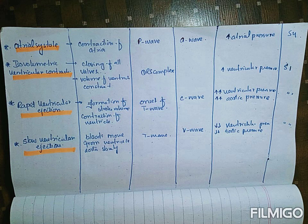During rapid ventricular ejection, ventricular pressure rises and aortic pressure also rises as blood is rapidly emptied from the ventricle into the aorta — this ejected volume is called the stroke volume. On the venous pulse pressure curve this phase corresponds to the C wave. There are three positive waves on the venous pulse: A, C, and V — and this phase corresponds to the C wave.